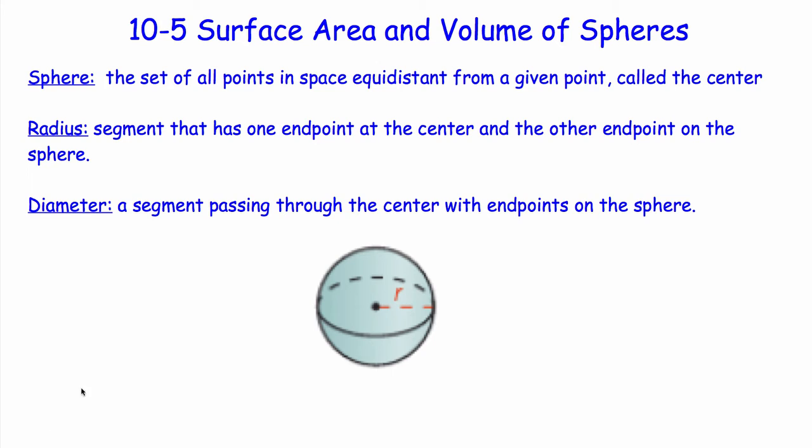Alright, welcome back. Today we're going to work with the surface area and volume of spheres, our last section in unit 10. What is a sphere? It's a set of all points in space equidistant from a given point called the center. What's a radius? A segment that has one endpoint at the center and the other endpoint on the sphere.